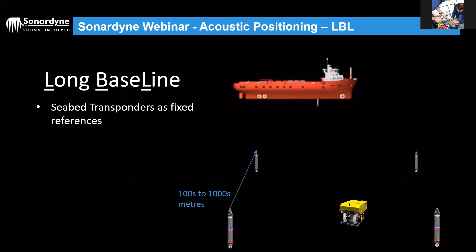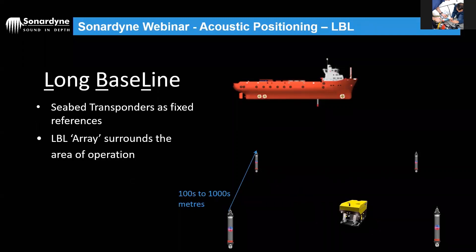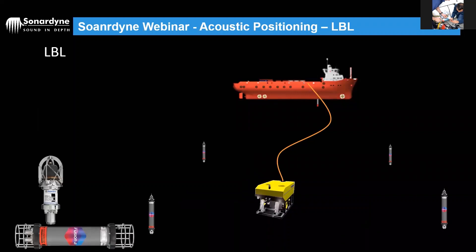LBL is called Long Baseline because those points of reference are fixed transponders on the seabed, placed around the area of work — some distance apart. It could be 100 meters, 1,000 meters, or up to 2,500 meters, depending on the application. These transponders surround the area of work. The thing we're tracking is always within the array. There are always four or more transponders — similar to GPS, you need four or more for redundancy.